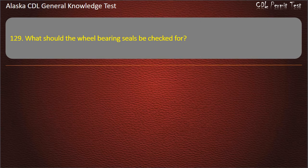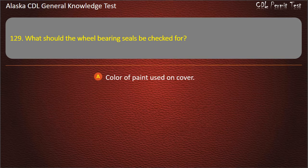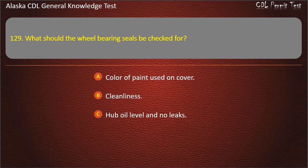Question 129. What should the wheel bearing seals be checked for? Color of paint used on cover, cleanliness, or hub oil level and no leaks. Answer: Hub oil level and no leaks.